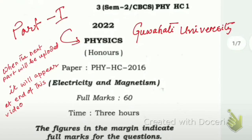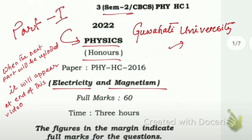Hello friends, in this video we're going to solve the Guante University paper for Physics Honours — Electricity and Magnetism for second semester 2022. I'm not going to solve all the problems in the same video; remaining questions will be solved in the next parts.